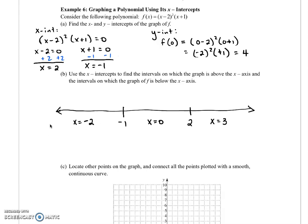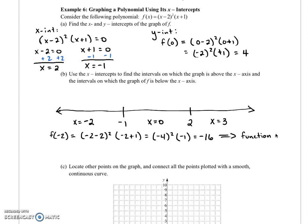Then I just evaluate the function at each of these x values. So f(-2) is (-2 - 2)² times (-2 + 1). That gives us (-4)² times (-1) is negative 16. So this is a negative number. That means the function is below the x-axis. So for this interval of x's, we have below x-axis.